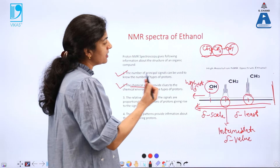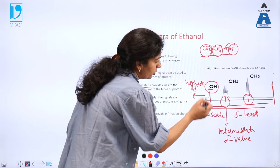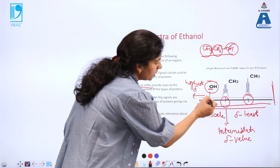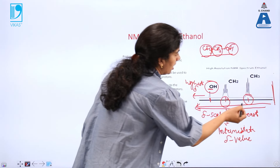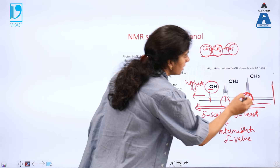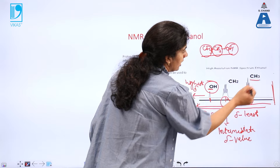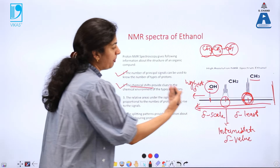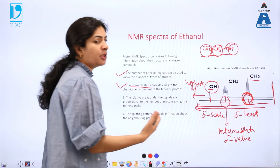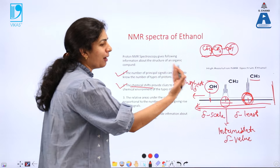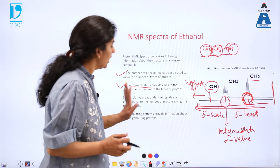To conclude: protons which are connected to electronegative elements are getting deshielded. Remember the sequence — deshielded, downfield, and high delta value. So the highest value of chemical shift is observed for these hydroxyl protons. The methyl protons, on the other hand, have the highest electron density in their surroundings. Therefore, they are shielded compared to the hydroxyl protons and CH₂ protons. Shielded means upfield, and therefore they have a low delta value. CH₂ comes in between the two.